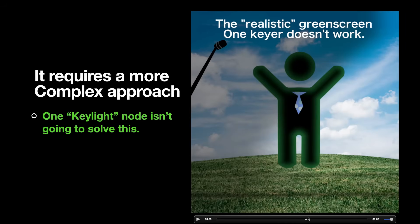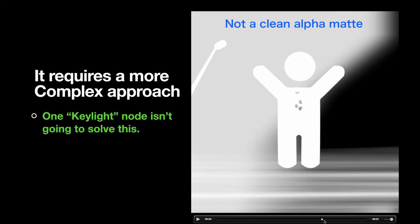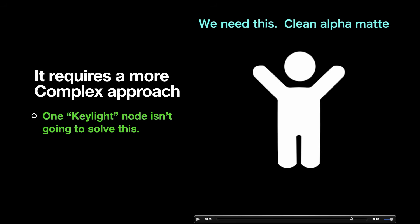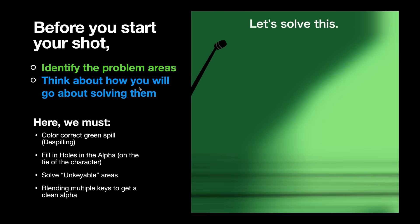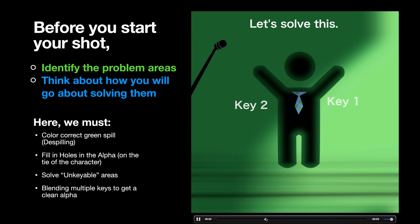If we look at what the alpha looks like, we see all our problems: the black is good where we've removed the background, but all the area that's not supposed to be there is a problem. We have holes in the middle of the character from the tie, the left side that needs to be transparent isn't, and we still have the wrinkles and the object. This is what we're looking for — an alpha that looks clean — and that's not what we have. Before you start your shot, identify all those problem areas and think about how you're going to solve them, and think mentally about how this puzzle is going to be solved.